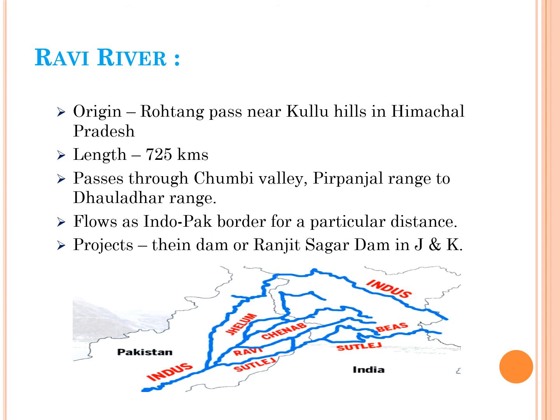The next left tributary of the Indus river is the Ravi river. It originated in Rotang Pass near Kulu hills in Himachal Pradesh and is 725 kilometers in length. After covering 725 kilometers, it joins the Chinab river in Pakistan. This river passes through Chumbi valley and the Pirpanjal and Dhauladhar ranges. The Ravi river also flows as the Indo-Pakistan border for a particular distance. The important project on this river is the Thein Dam, also called the Ranjit Sagar Dam, in Jammu and Kashmir state.